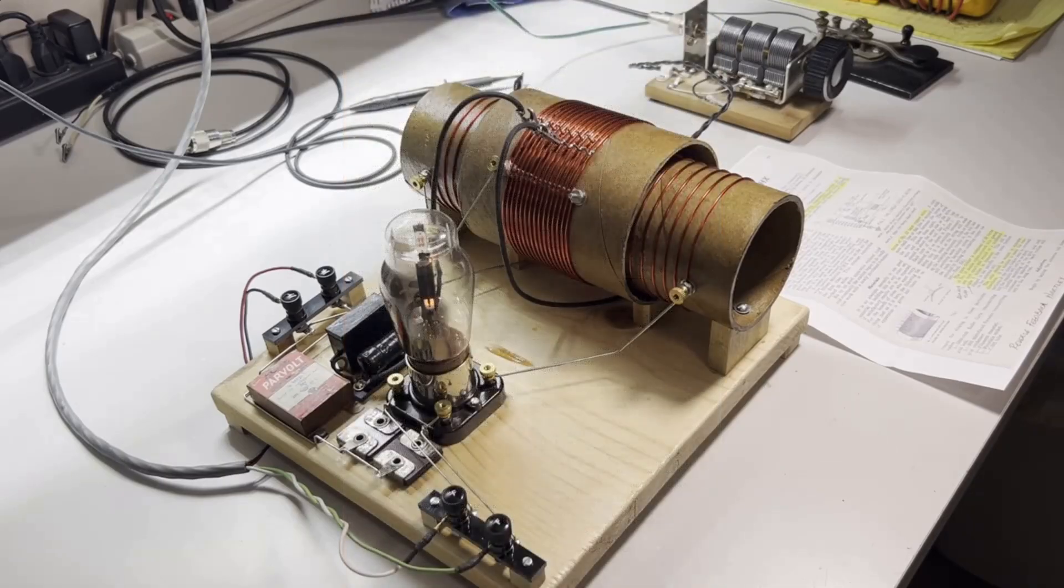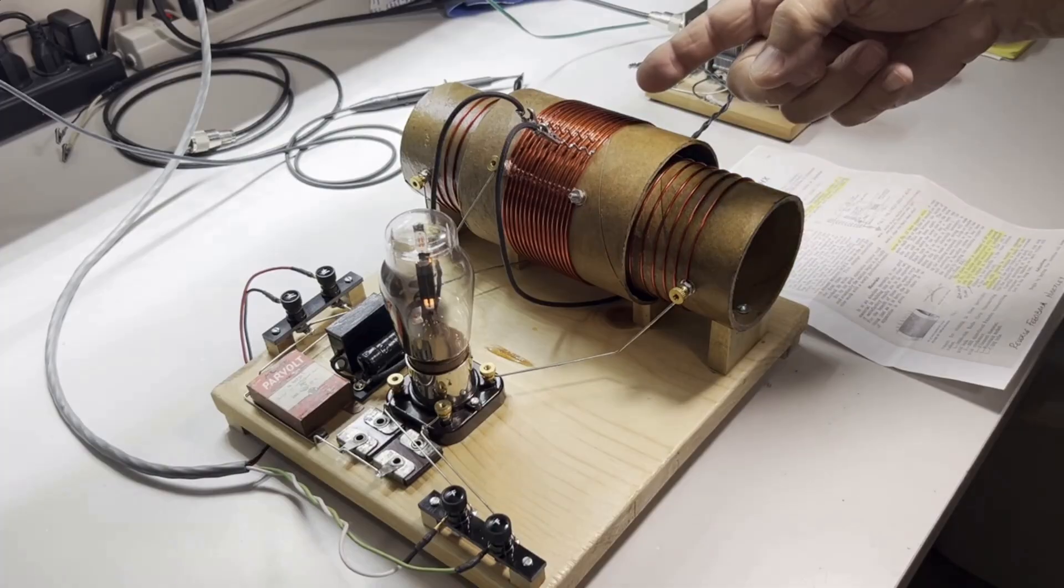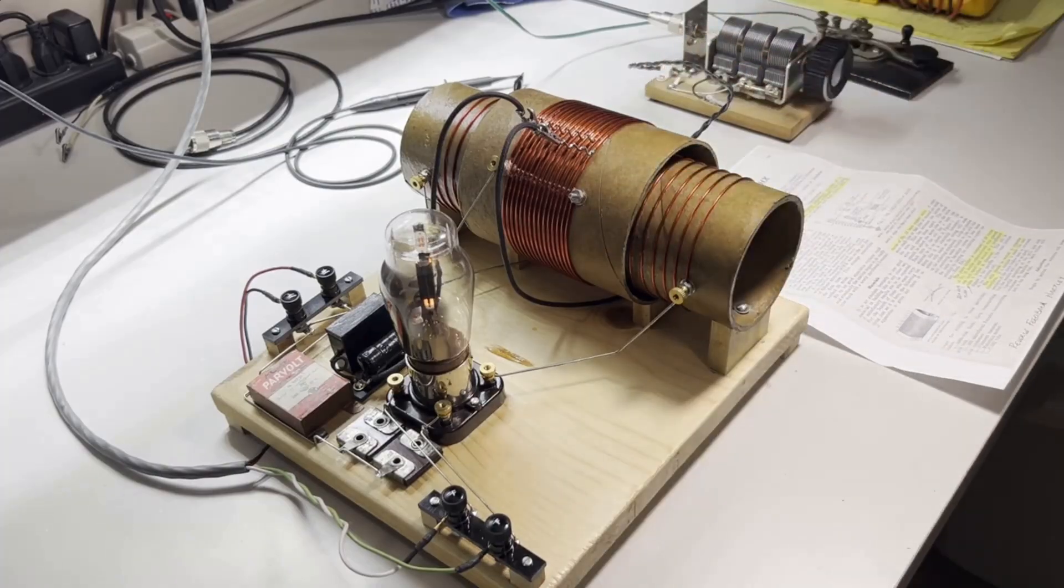It's known as a reverse feedback Hartley. This is the tank coil. This is the antenna and the grid coil. Kind of unconventional.